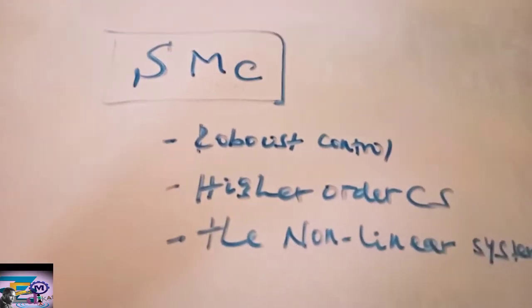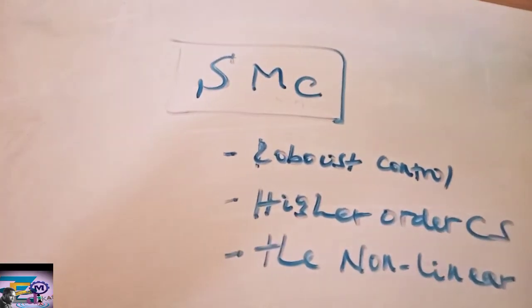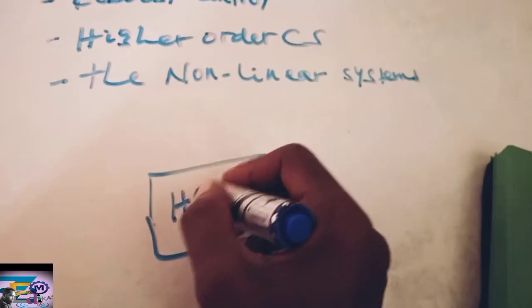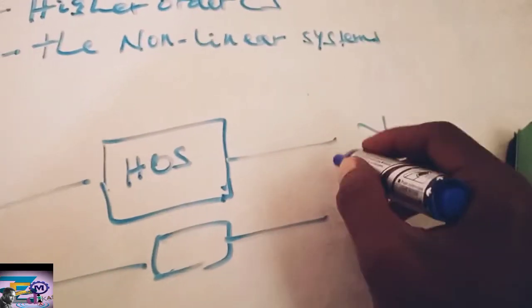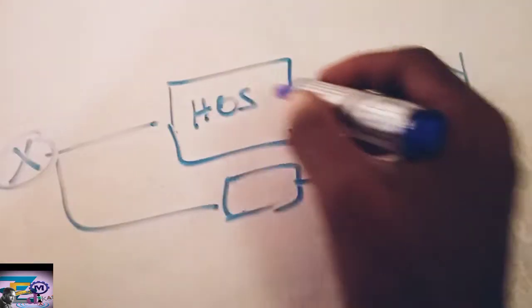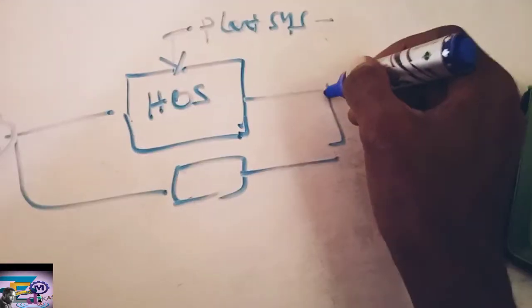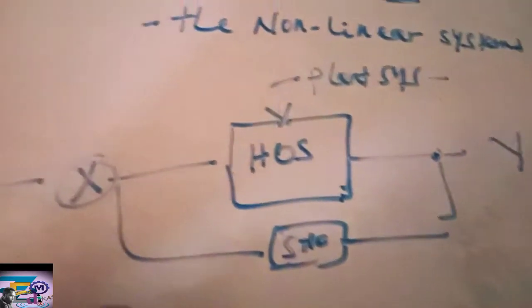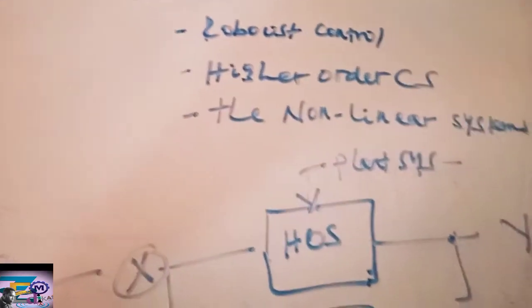Sliding mode control is implemented for a linear plant. Suppose we have a plant that is linear, unstable, or a higher-order system. We implement the controller for our system so that an output is obtained from a given system. We have a control input and a plant, and we put the plant's system mathematical model under examination to implement the SMC control.